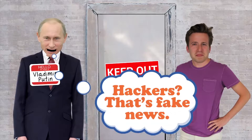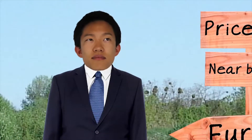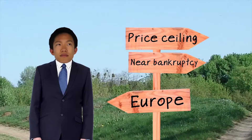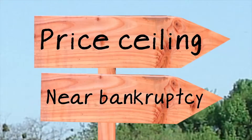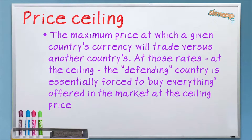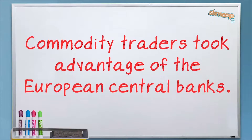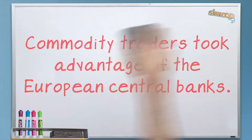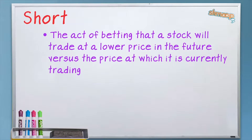You can imagine how a country could go bankrupt trying to defend its currency. An easy path there — and this path almost bankrupted Europe when the euro came out — was to set a price ceiling. That is, you set a maximum exchange rate so that your currency is never valued less than some ratio to a hard currency like the U.S. dollar. At that time, commodity traders took big advantage of the European central bank's narrow-mindedness, and they made a killing, essentially shorting the euro just before it started to float.